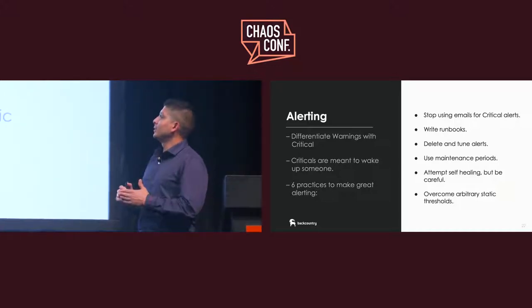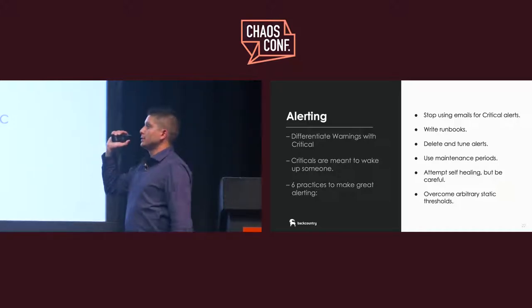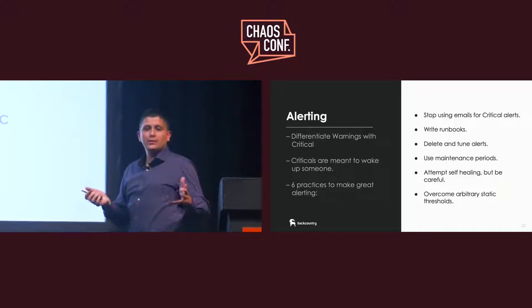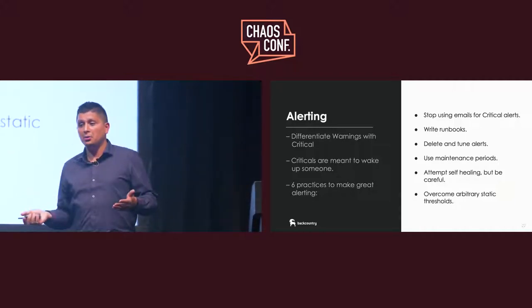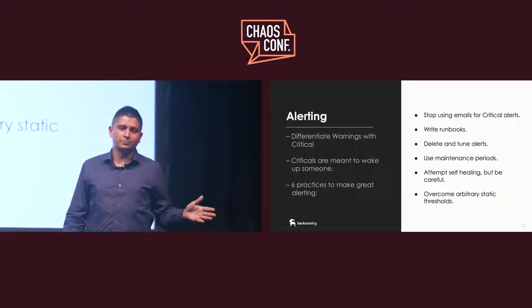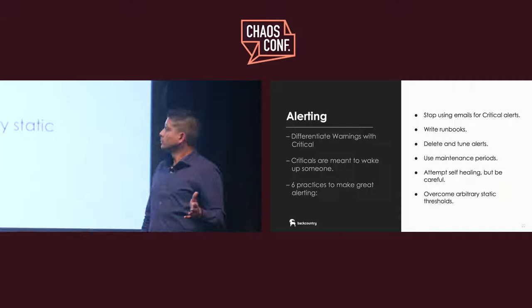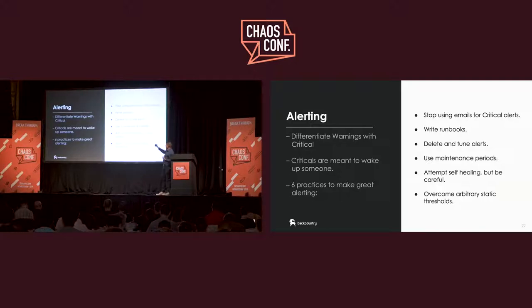The last observability area is alerting. Be sure to differentiate between warnings and criticals. A warning can be sent as an email or shown on a dashboard, but a critical event must wake somebody up. Do not rely only on email for a critical — send the email and call that person. If you get that right, here are six practices for great alerting.